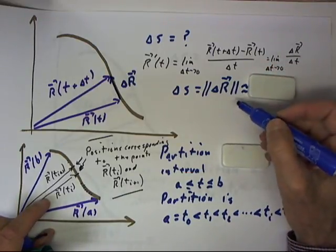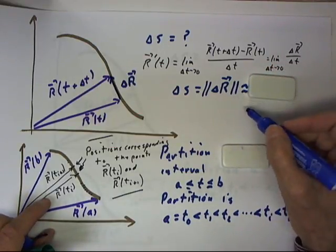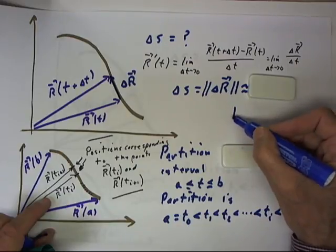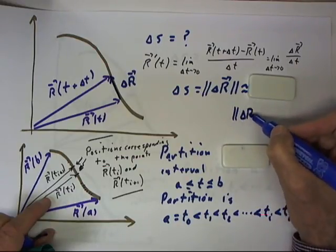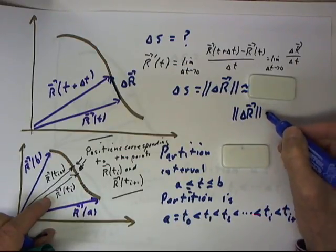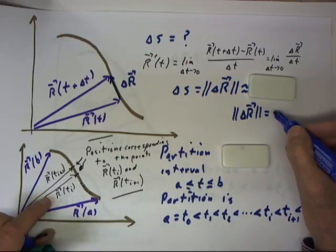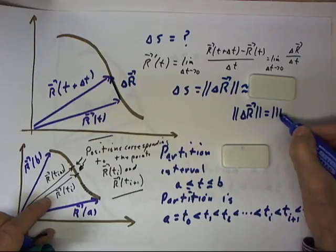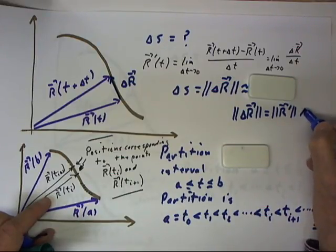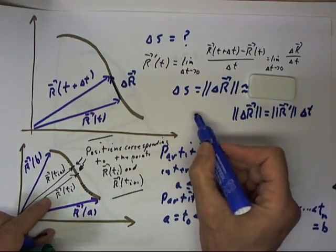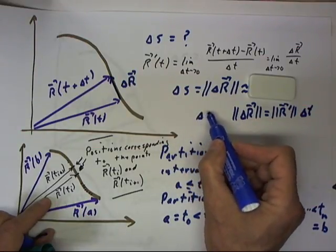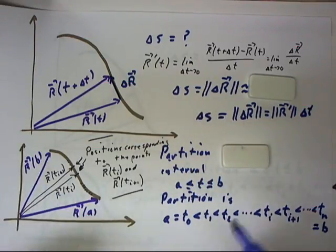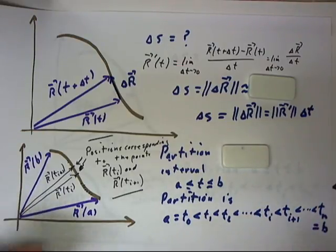So let's just say that magnitude of delta r equals delta t. That's the magnitude of r prime times delta t. So that delta s equals magnitude of r equals magnitude of r prime delta t.